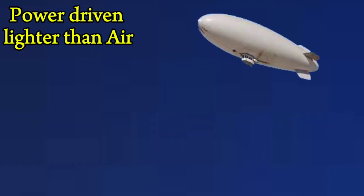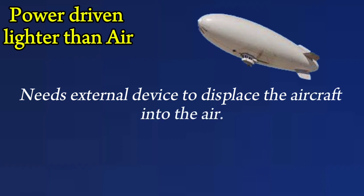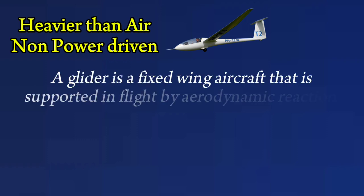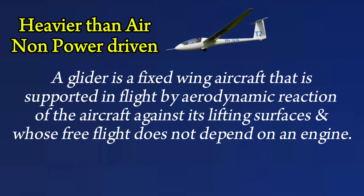Power driven lighter-than-air aircraft needs an external device to displace the aircraft into the air. For heavier-than-air non-power driven aircraft: a glider is a fixed-wing aircraft that is supported in flight by aerodynamic reaction against its lifting surfaces, and whose free flight does not depend on an engine.